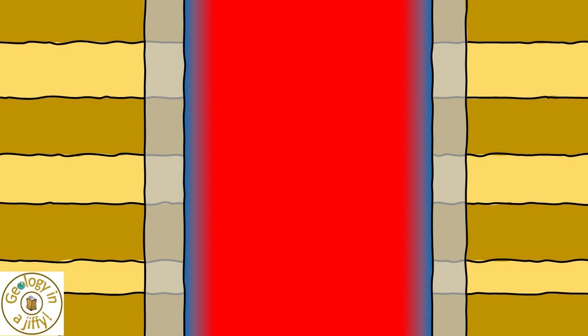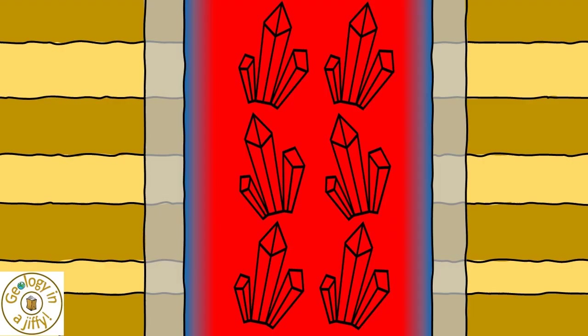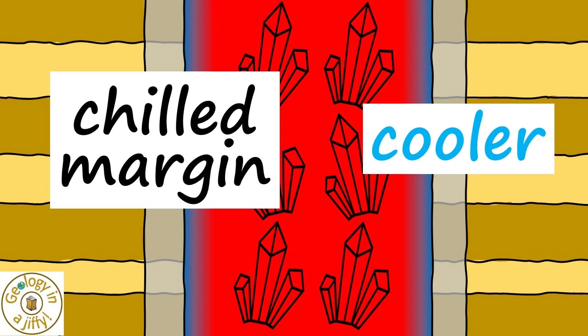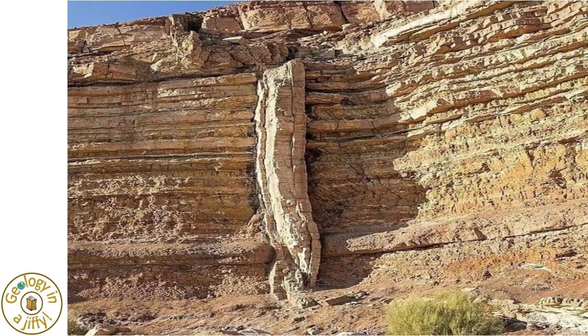The dike itself has a hotter core, enabling the magma here to cool more slowly over time. This long cooling time enables the magma to crystallise as larger crystals in the centre of the dike. Here at the edges of the dike we have a chilled margin, where the cooler country rock touches the hot magma, forcing the magma to crystallise faster, so forming smaller crystals in the chilled margins.